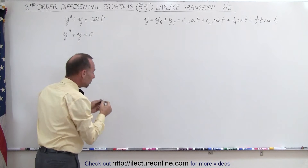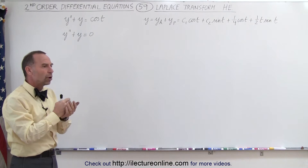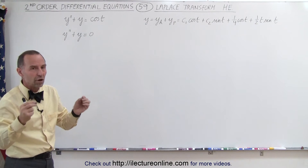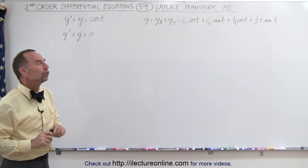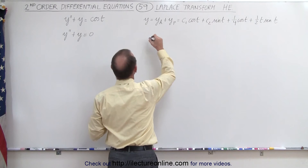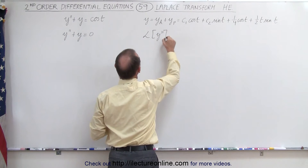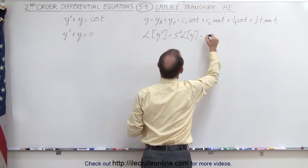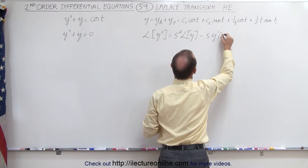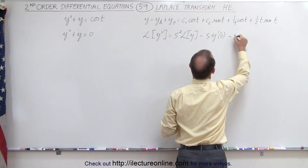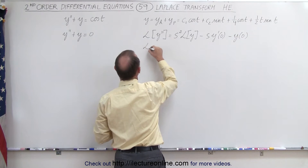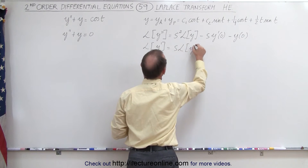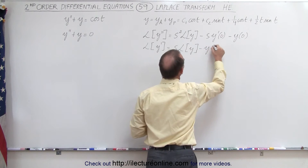Notice that typically when we use the Laplace transform, we use what we call initial value problems, where we're given the initial value for y prime and y to solve the exact solution. We do realize that the Laplace transform of y double prime is equal to s squared times the Laplace transform of y, minus s times y prime evaluated at t equals zero, minus y evaluated at zero. And the Laplace transform of y prime is equal to s times the Laplace transform of y minus y evaluated at zero.